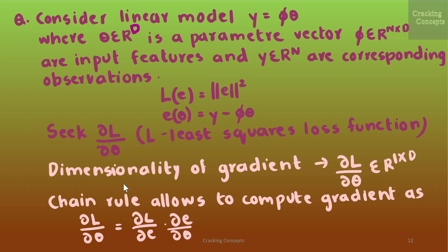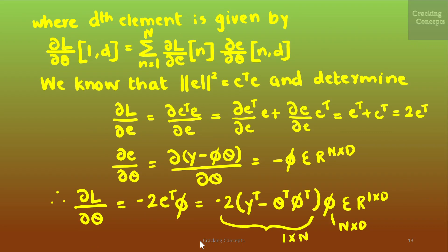Before starting the calculation, we need to find the dimensionality of the gradient: ∂l/∂θ belongs to ℝ¹ˣᵈ. The chain rule allows us to compute the gradient as ∂l/∂θ = (∂l/∂e)(∂e/∂θ), where the d-th element is given by ∂l/∂θ|_{1,d} = Σₙ₌₁ᴺ (∂l/∂eₙ)(∂eₙ/∂θd). This value belongs to a matrix with two indices n and d.